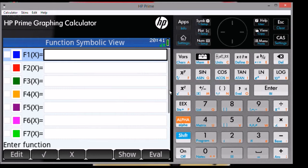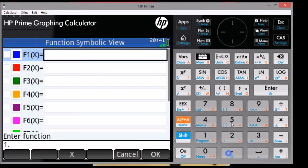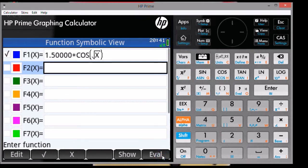The next thing we want to do is to type in our function. I'm going to use f1 of x, and the function is going to be 1.5 times the cosine of the square root of x.